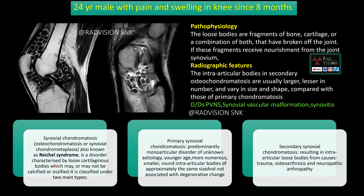Whenever you see multiple loose bodies within the joint space with these imaging features, definitely suspect Synovial Osteochondromatosis. This is also called Reichel syndrome. There are two main types: primary and secondary. Primary occurs in young age where multiple or numerous loose bodies are seen — smaller, round to oval, of uniform sizes, not associated with degenerative changes. Secondary Osteochondromatosis has multiple loose bodies with associated history of trauma, osteoarthrosis, arthritis, or neuropathy. Most common differentials are pigmented villonodular synovitis, synovial vascular malformation, or synovitis.